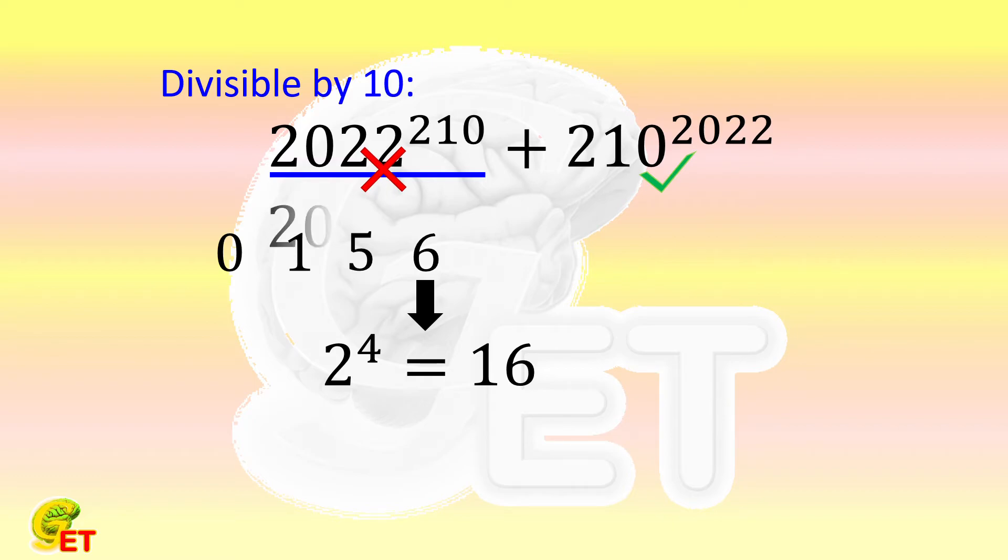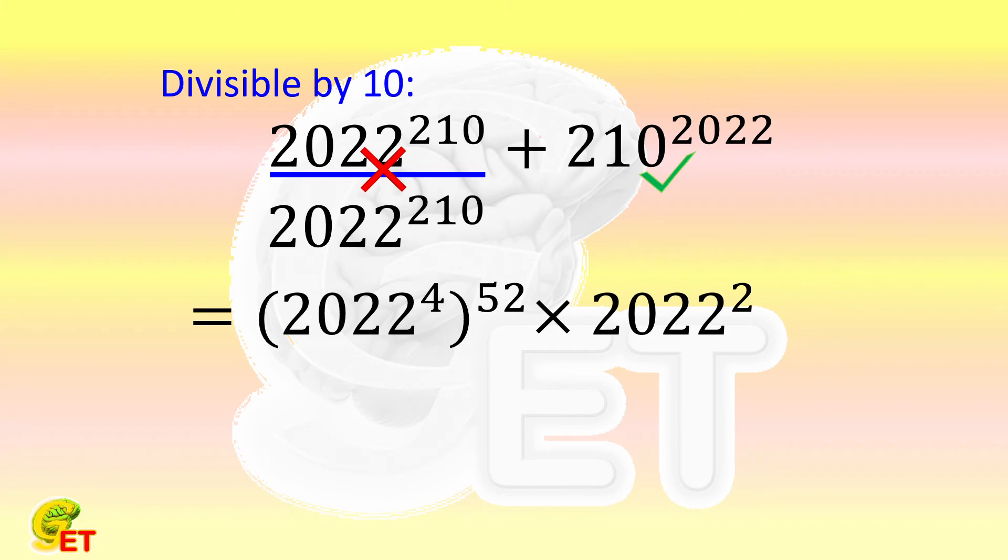So we write 2022 to the 210th power as 2022 to the fourth power and then to the 52nd power, multiplied by 2022 to the second power. The digit at the 1's place of the first part is 6, and that of the latter part is 4. Multiplied together, we get this digit is still 4. So the digit at the 1's place of 2022 to the 210th power is 4.